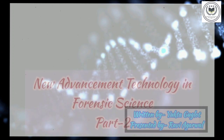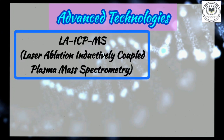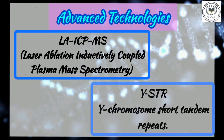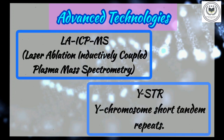In this video, we will talk about two new and advanced technologies of forensic science used for analysis of forensic samples. The first one is LA-ICP-MS, Laser Ablation Inductively Coupled Plasma Mass Spectrometry, and the second one is YSTR, Y-chromosome short tandem repeat.